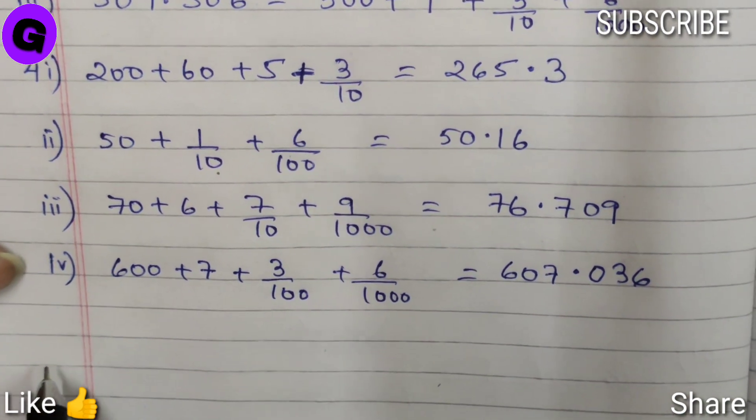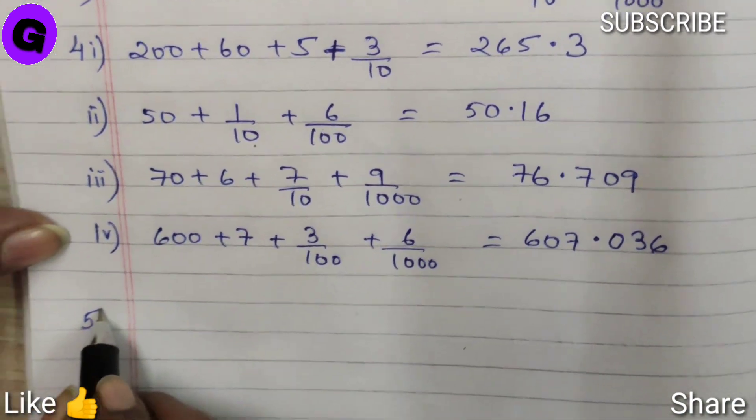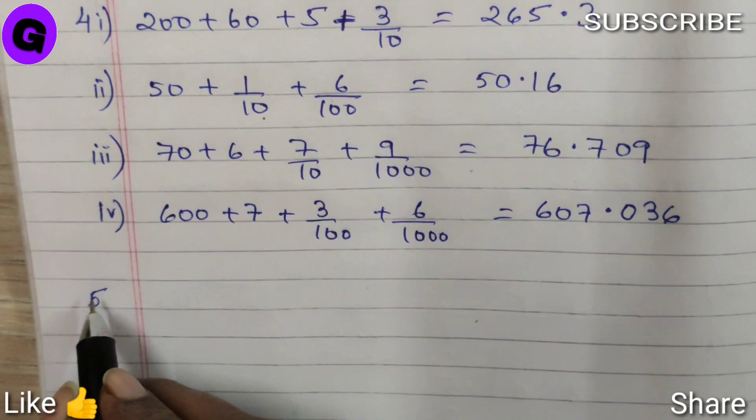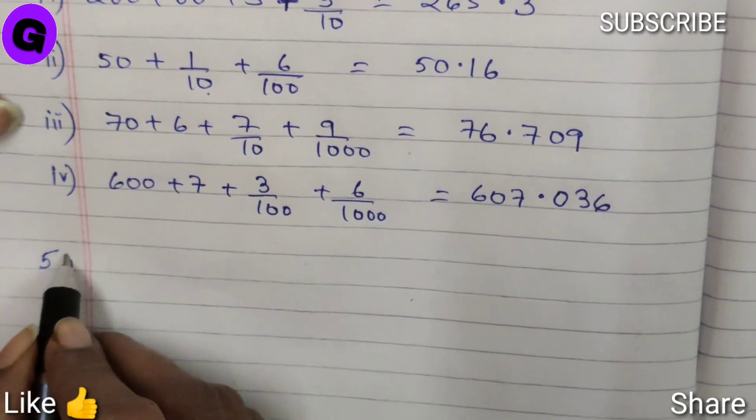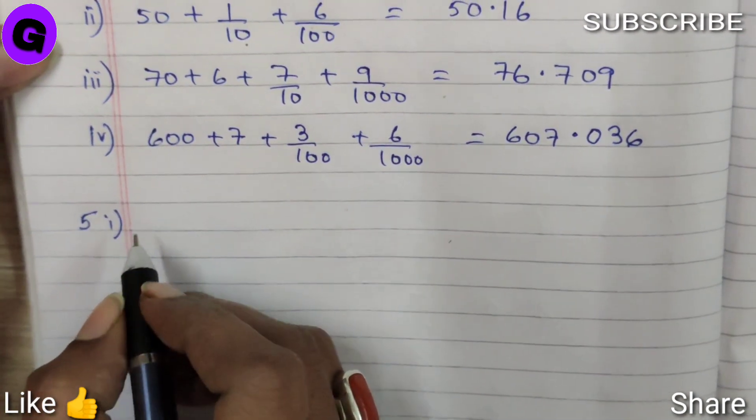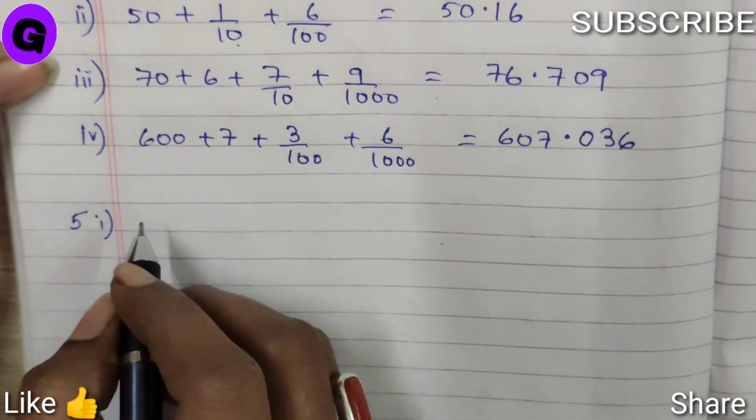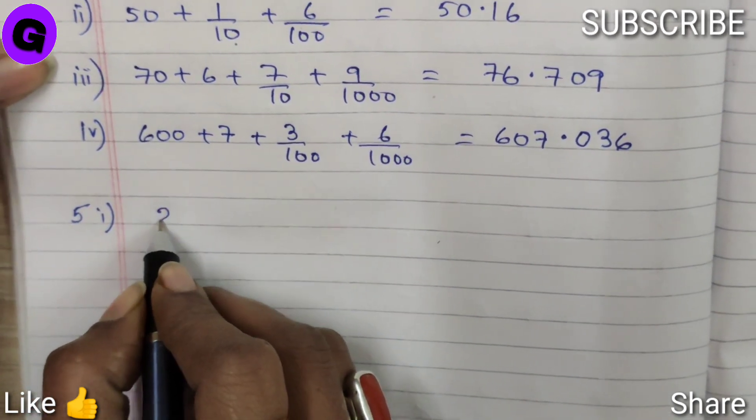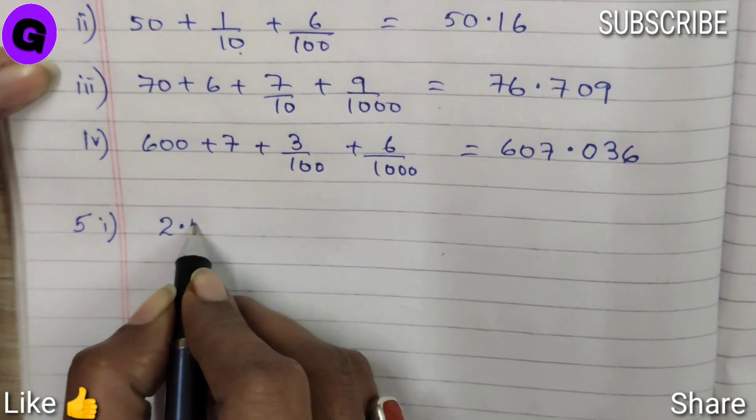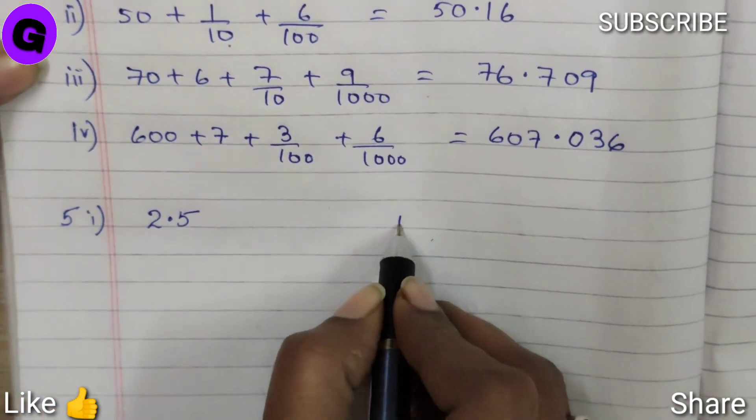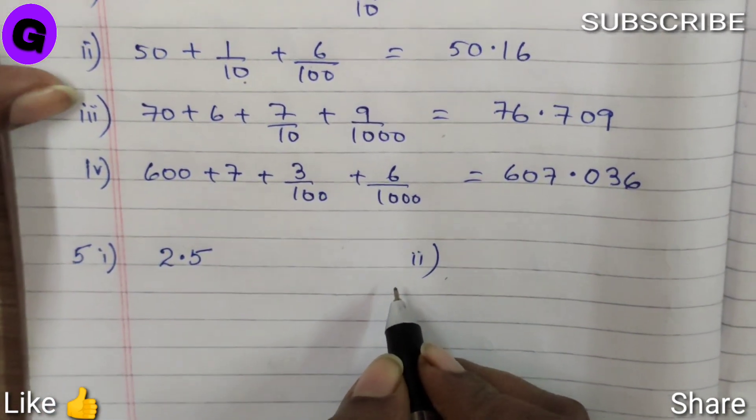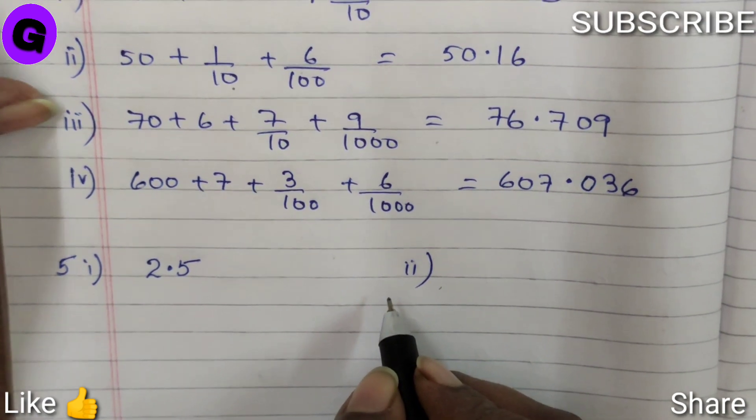Now we will come down to question number 5, where we have to write each of the following as decimal. It says 2 ones and 5 tenths. That means 2.5.